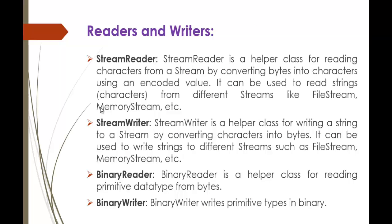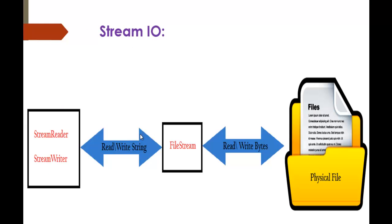The stream class is an abstract class which helps us to read and write to a file, memory stream, or whatever resource. The stream class consists of certain helper methods: StreamReader, StreamWriter, BinaryReader, and BinaryWriter. StreamReader is a helper class for reading characters from a stream by converting bytes into characters using an encoded value — it can be used to read strings from different streams like FileStream and MemoryStream. StreamWriter helps to write to a physical file. BinaryReader reads primitive data types from bytes, and BinaryWriter writes primitive types into binary. We will concentrate on StreamReader and StreamWriter.